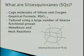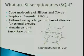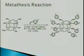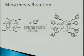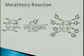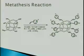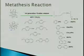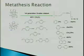Currently, silsesquioxanes are functionalized in our research using two reactions called the metathesis and Heck reactions. The metathesis reaction is a double replacement reaction where a vinyl functional group replaces a hydrogen atom on each corner of the silsesquioxane cage. We use Grubb's first generation catalyst in this reaction. This diagram shows the reactions that we have run and some of the functional groups that we have used, including phenyl, naphthalene, and biphenyl.